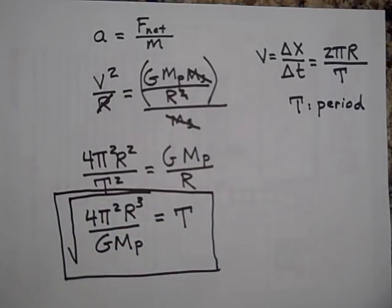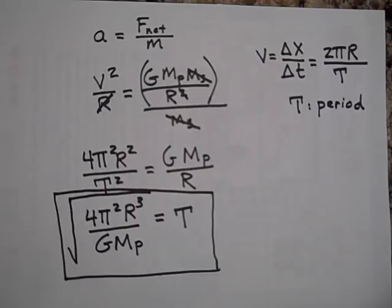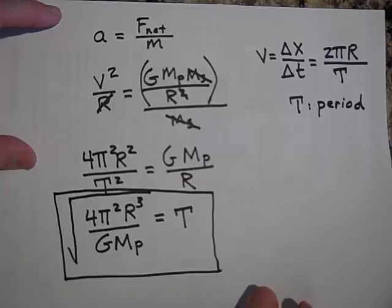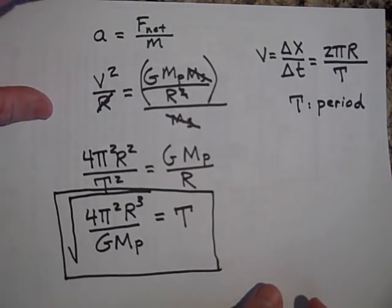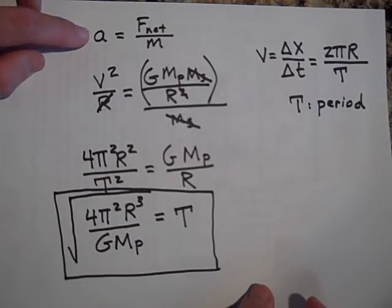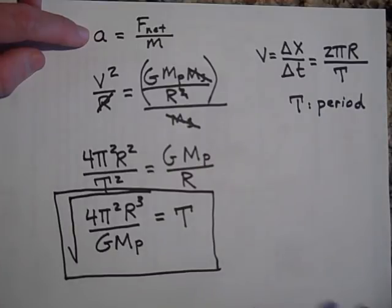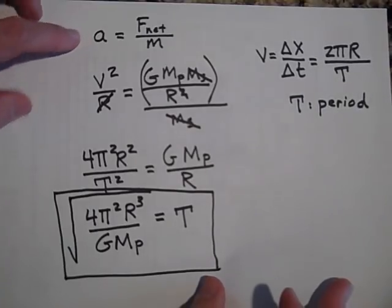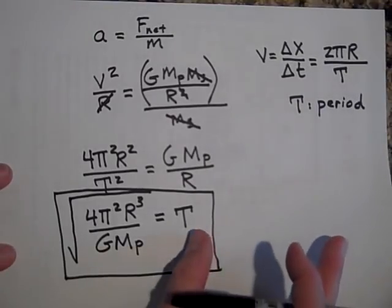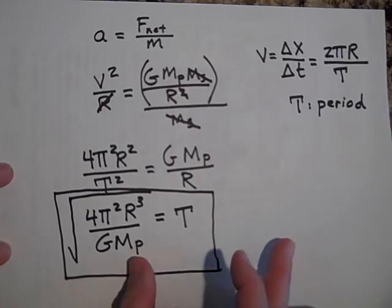This right here is the period of a satellite. Again, we're not going to memorize that. By the time we're done with this unit, we don't want 25 different equations — we want to see how they all fit together. That's one of the beauties of physics: with a few equations and a little bit of thinking, you can do all sorts of things. That is the period of a satellite.